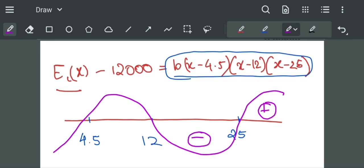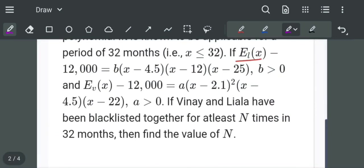For x between 4.5 and 12, EL(x) is greater than 12,000, which means EL(x) minus 12,000 is positive. We want to find how many times the company blacklists the person.